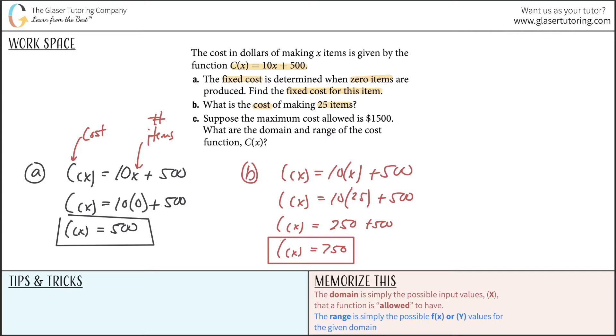This question could possibly be interpreted as just taking 10 multiplied by 25 to say the cost of producing 25 items would be 250 dollars. You could make an argument there. I'm just going based off the question which says the cost in dollars of making x items is given by this function. So based on what they're telling me, this would be the answer, although I do understand if you had a slightly different perspective.